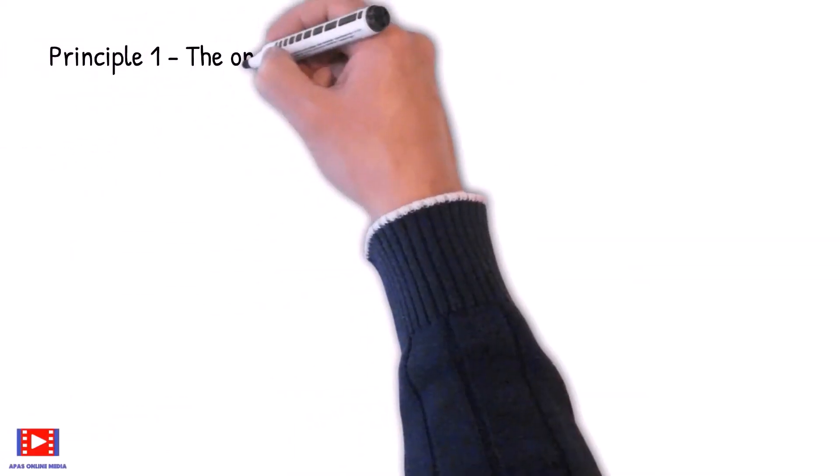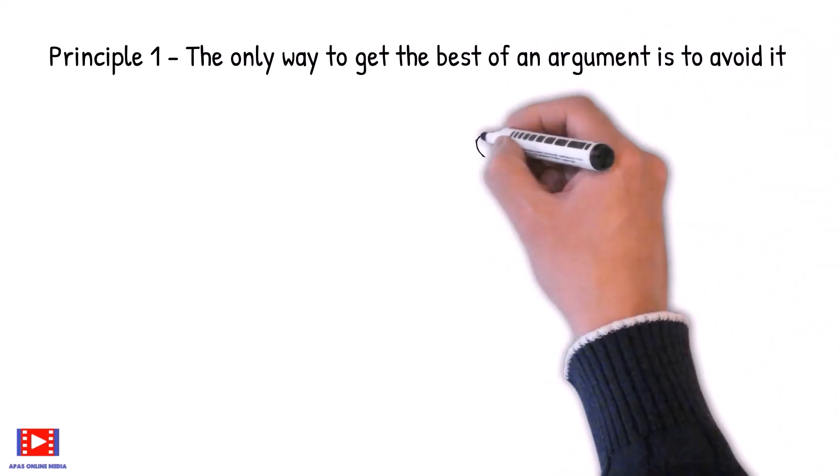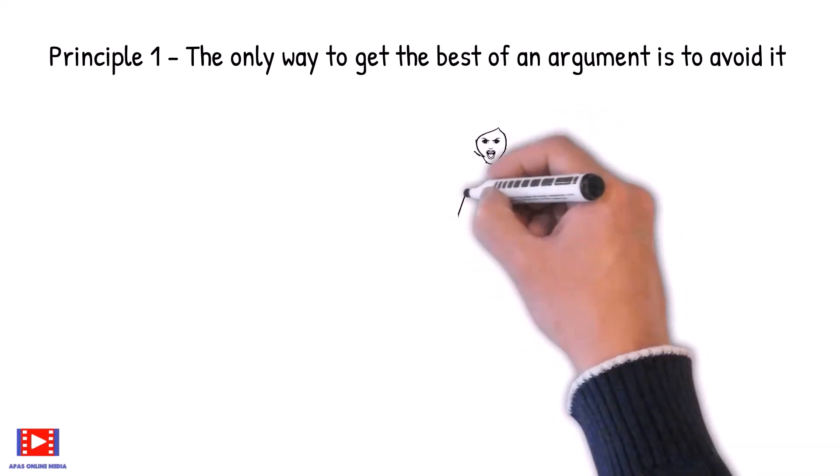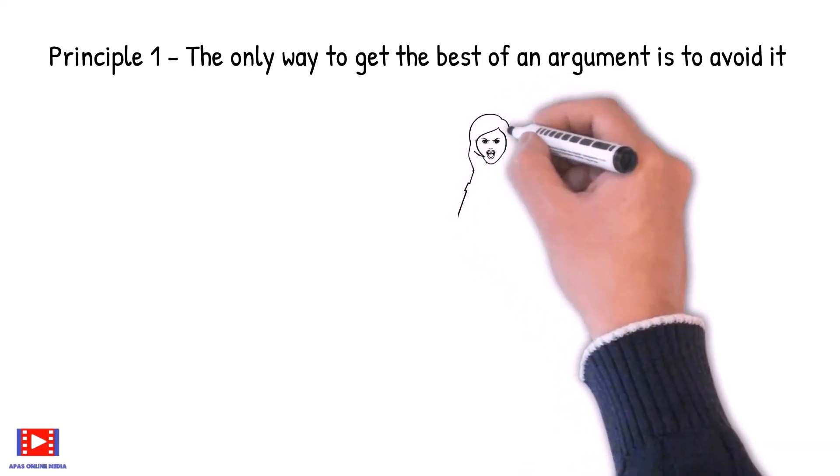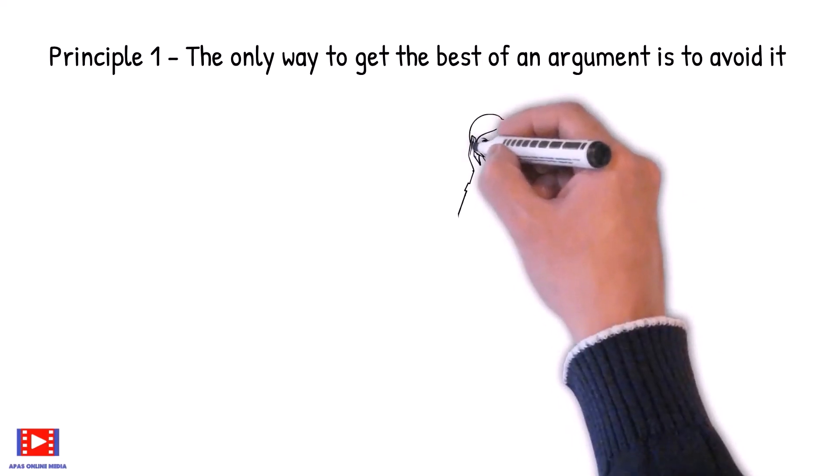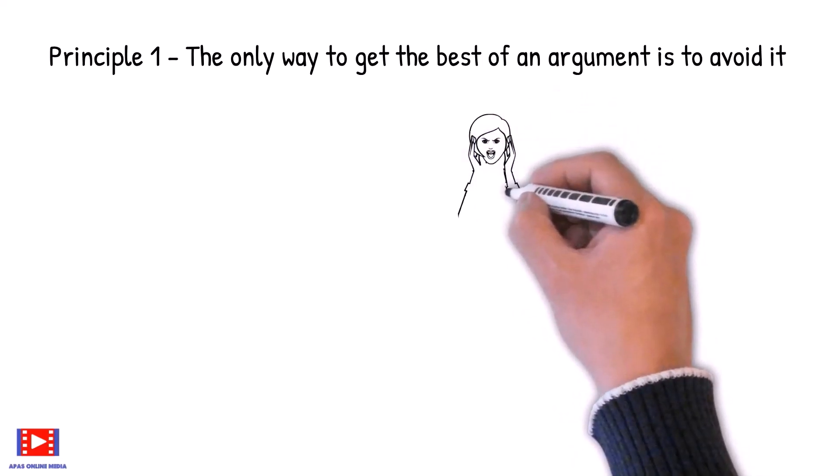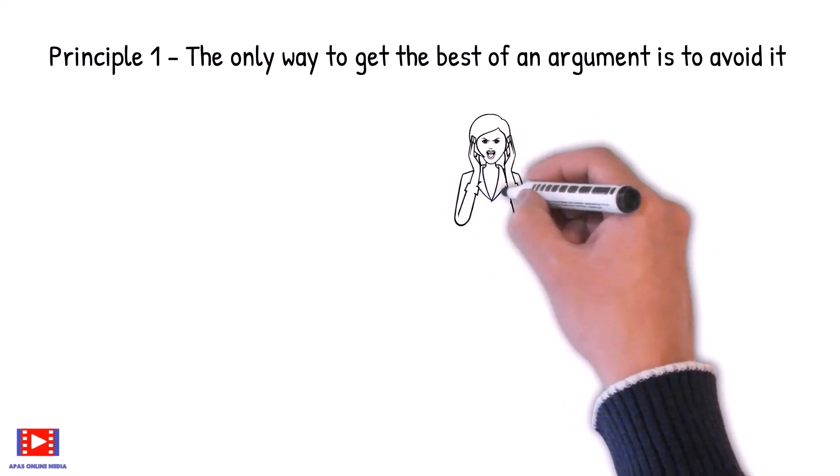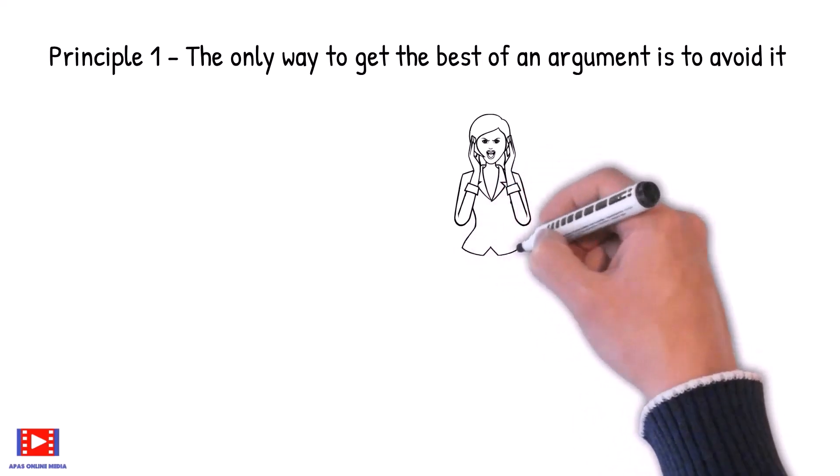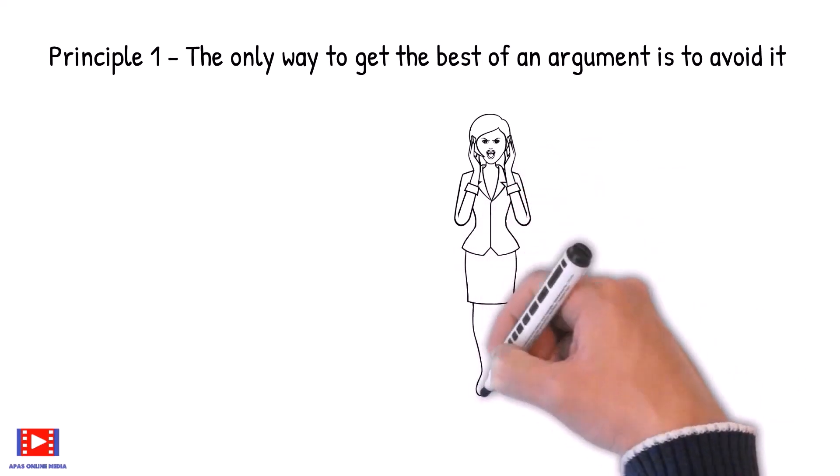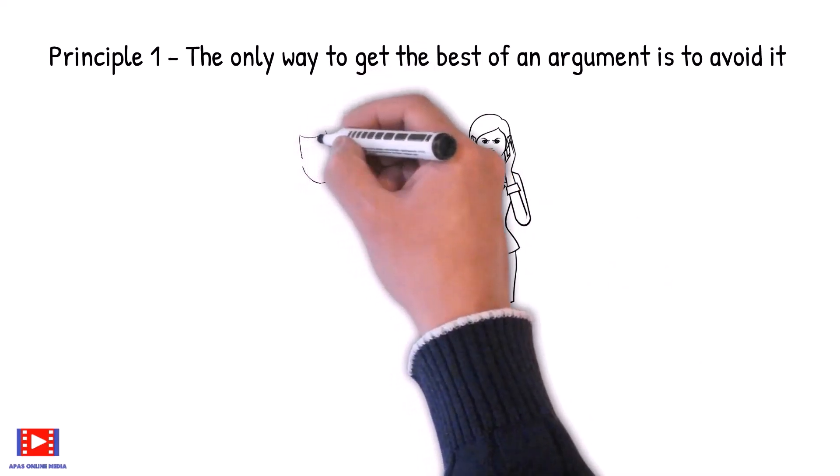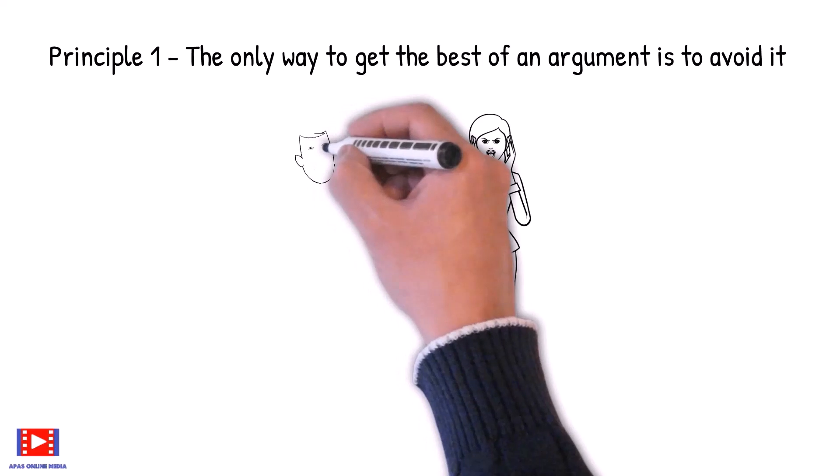Principle 1: The only way to get the best of an argument is to avoid it. We should always welcome the disagreement which is the cause of any argument. We should understand why the other person is not agreeing with us. We should also distrust our first instinct impression and try to look beyond and understand why there is a disagreement.